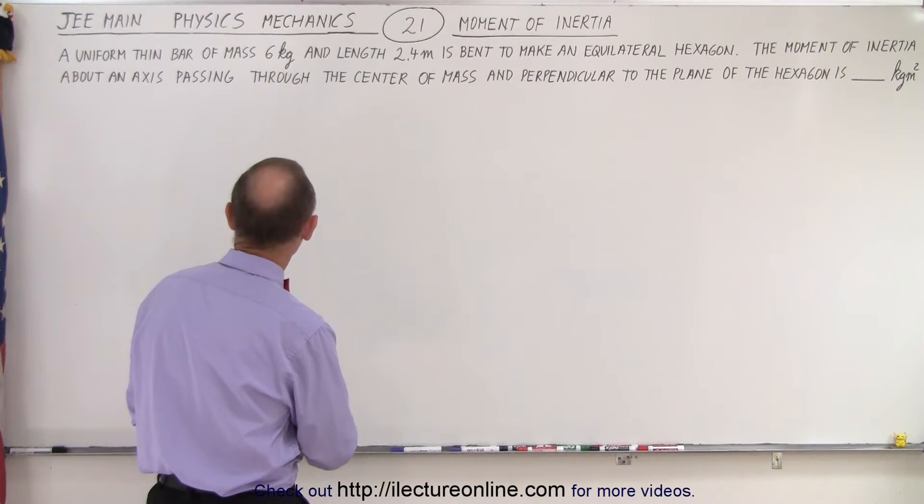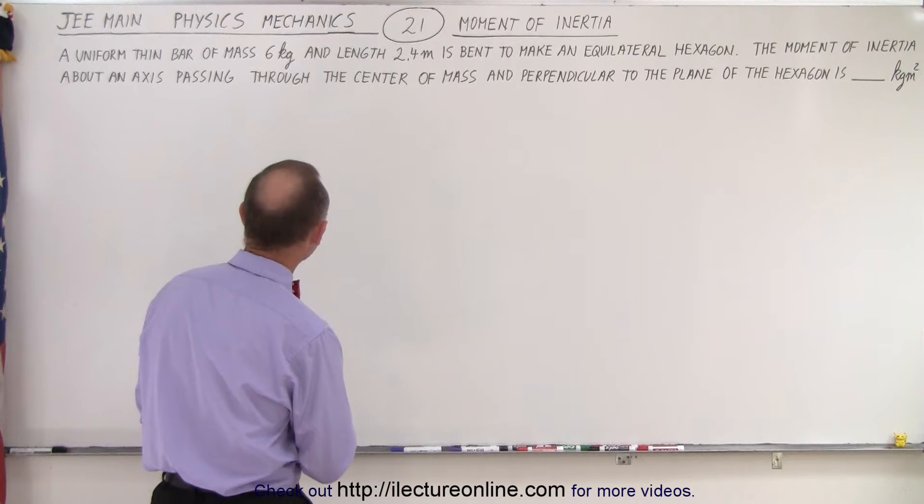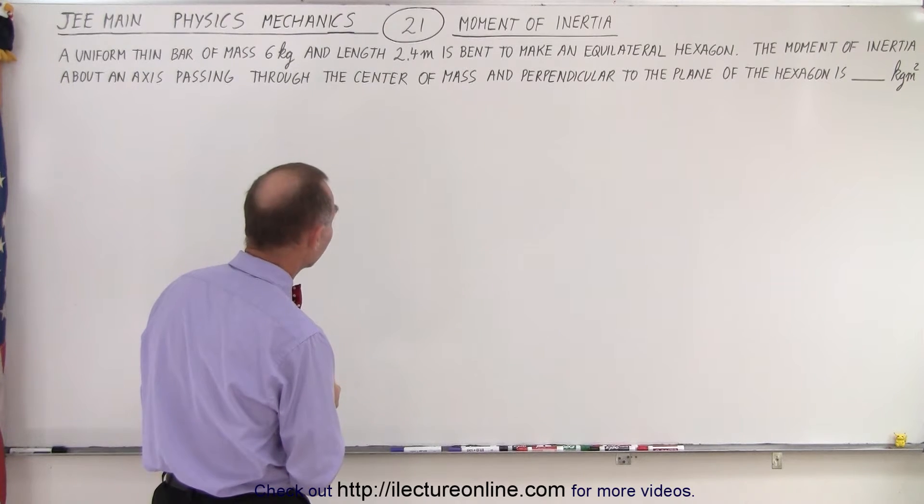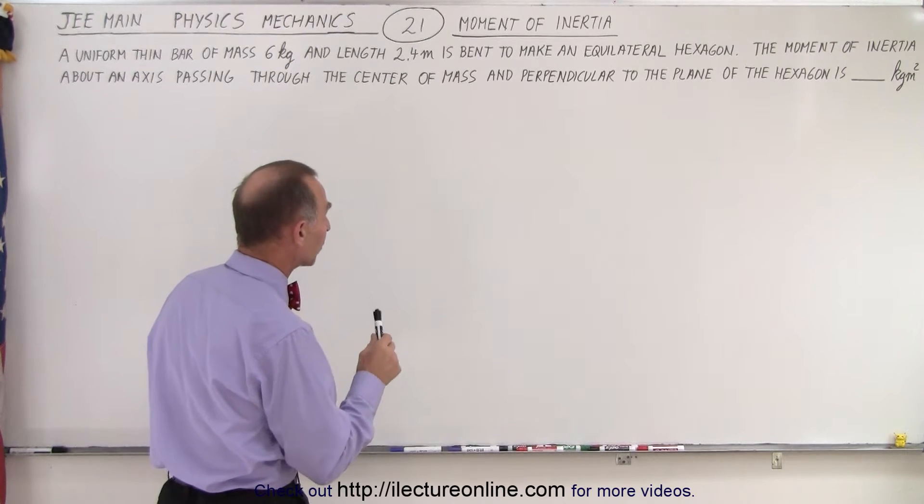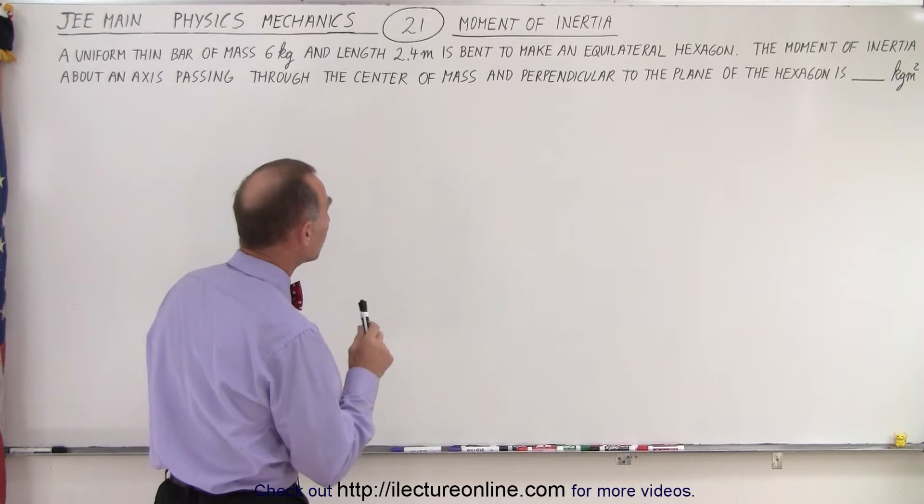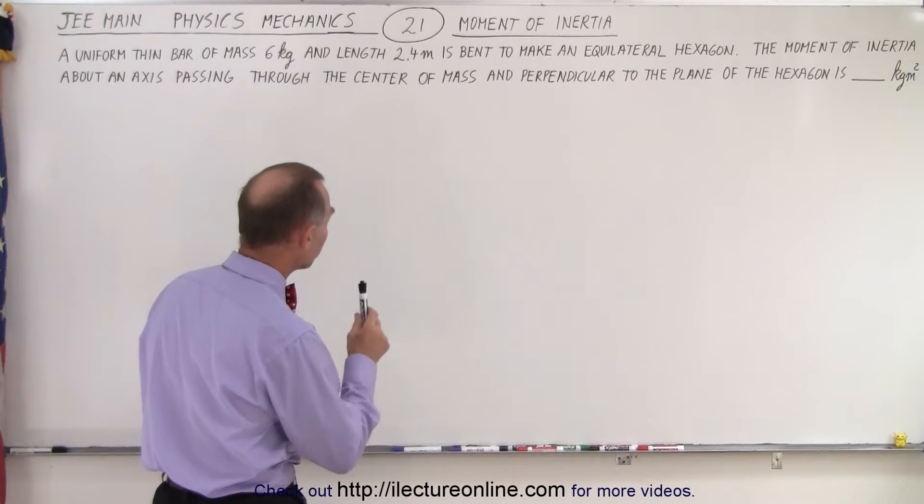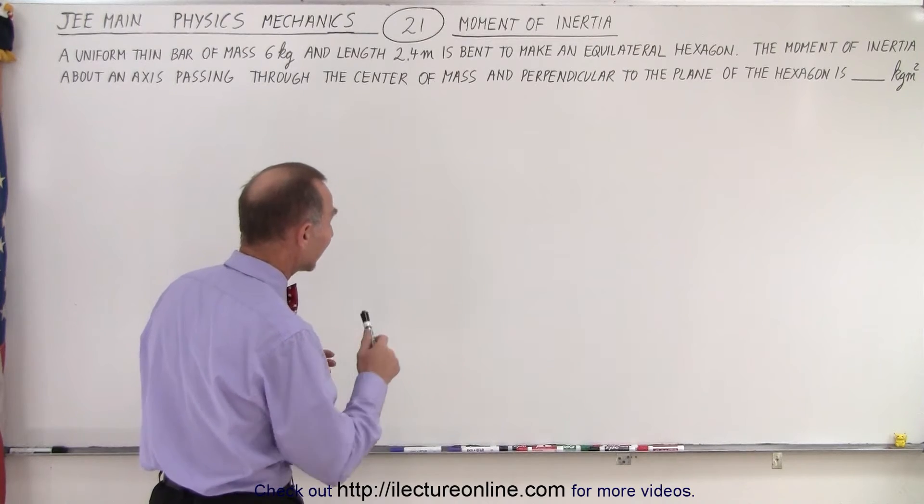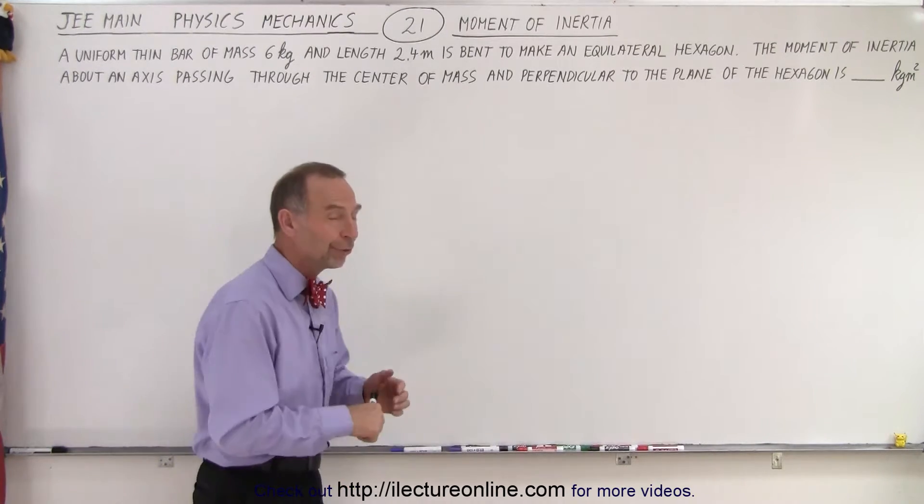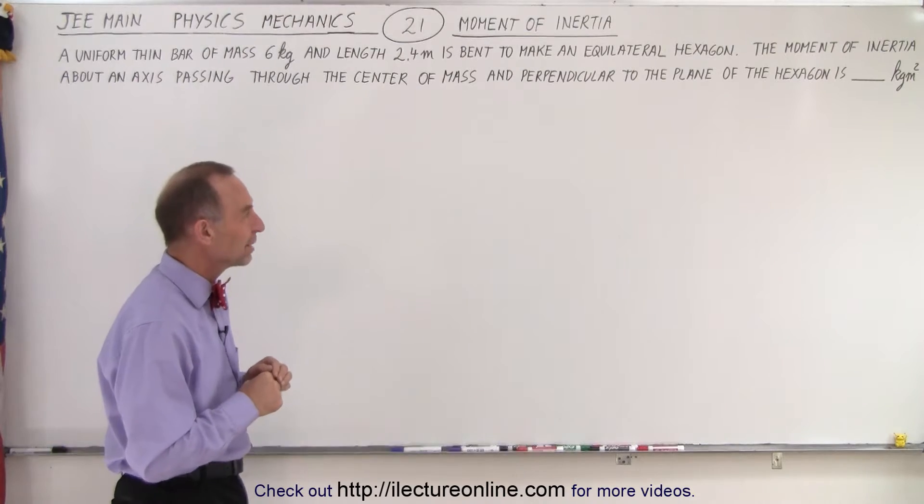A uniform thin bar of mass 6 kilograms and length 2.4 meters is bent to make an equilateral hexagon. The moment of inertia about an axis passing through the center of mass and perpendicular to the plane of the hexagon is - we're looking for an integer number of kilogram meters squared.